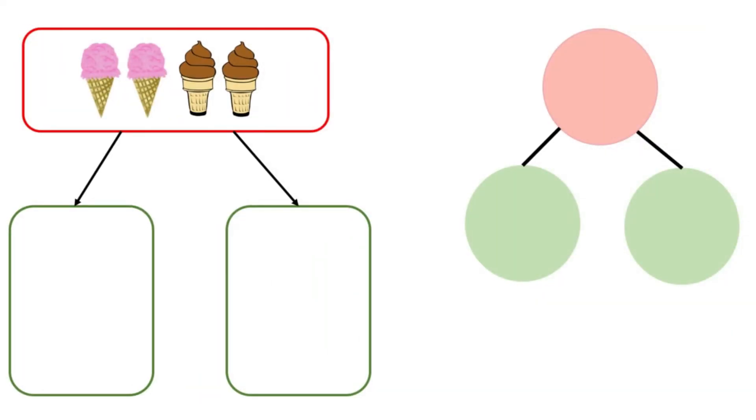Let's look at another example. How many ice creams are there? There are one, two, three, four. Four ice creams altogether. This is our whole.